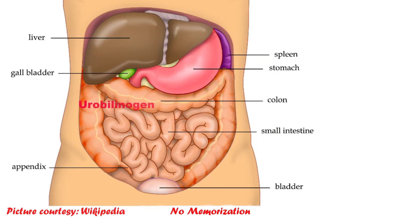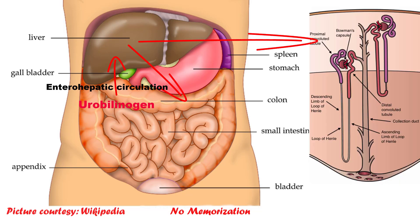A small portion of this urobilinogen will be reabsorbed from the GI tract. This reabsorbed urobilinogen may again recycle into the GI tract, or pass through the urine — as it is a small, unbound, water-soluble molecule, unlike bilirubin which was bound with plasma protein. So a small amount of urobilinogen will normally pass in the urine. And this is the physiology of bilirubin metabolism, which is very important to know to differentiate different types of jaundice.